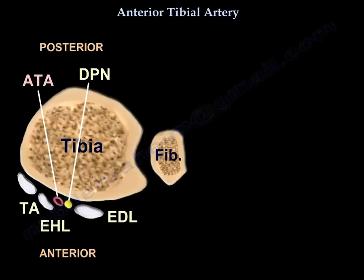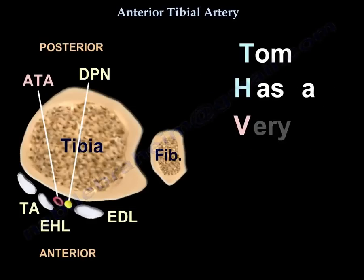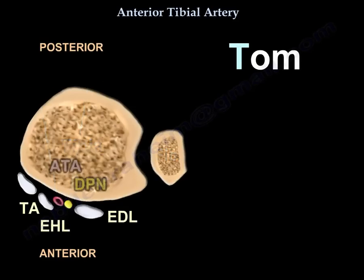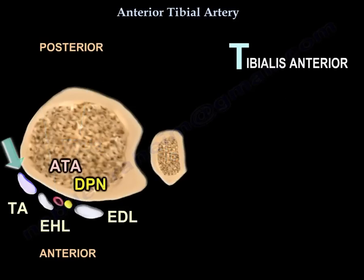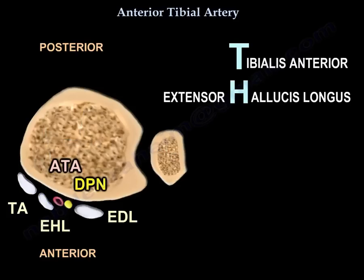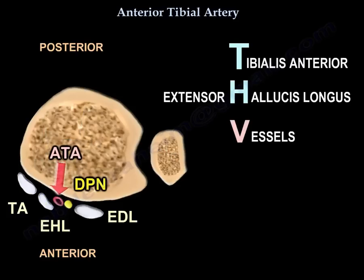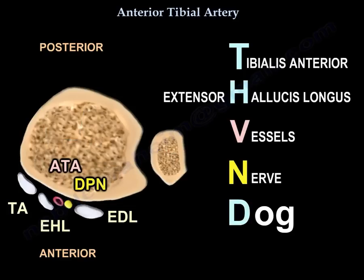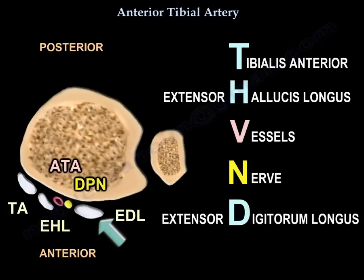We remember it by the mnemonic: Tom Has Very Nice Dog. T is for tibialis anterior, H is for extensor hallucis longus, V is for vessels, N is for nerve, and D is for extensor digitorum longus. This mnemonic only works in the distal part of the anterior tibia, in front of the ankle.